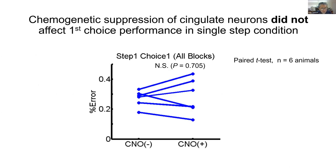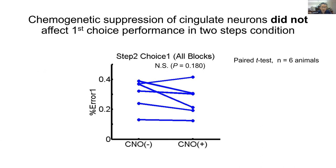We plotted the percent error rate in the single-step choice condition — this is essentially the auditory discrimination performance. We found no statistically significant difference between the CNO-minus and CNO-plus conditions. In other words, chemogenetic suppression of cingulate neurons did not affect first-choice auditory discrimination performance in the single-step condition. Similarly, we found no significant effect on first-choice performance in the two-step condition either.